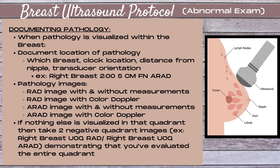It's also crucial that any pathology in the breast be measured in a radial and an antiradial scanning plane. If you do these in sagittal and transverse in the breast, you're going to underestimate your mass size, and the most suspicious features of the mass usually will not be visualized.